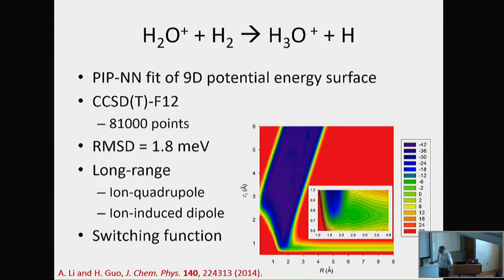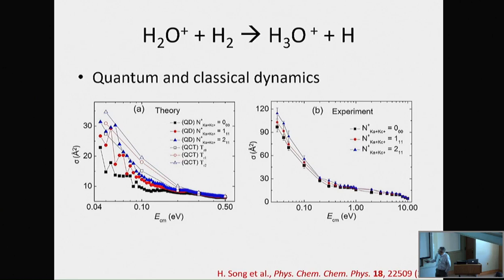We have about 80,000 points at various geometries, and you can fit this with only about two milli-eV of fitting error. The long-range term is very important, so we have to add that in using a switching function. This is the shape of the potential — you're coming in from here, there's a little well, and eventually you escape from the exit channel, which is highly exothermic. We can actually calculate this quantum mechanically. For different rotational states of the water cation, we do see a significant difference in reactivity. Indeed, there is mode specificity in this reaction, which is counter to the conventional wisdom for ion-molecule reactions.